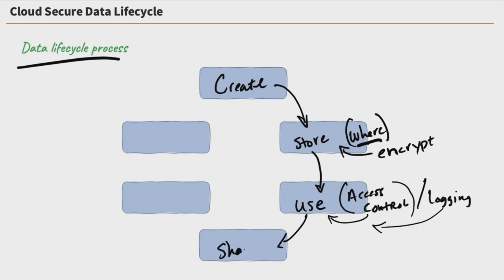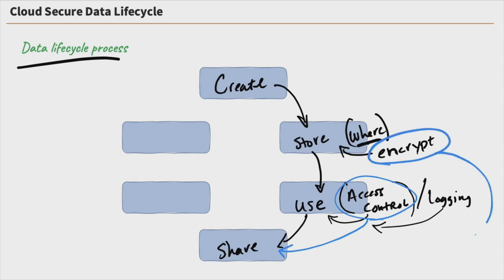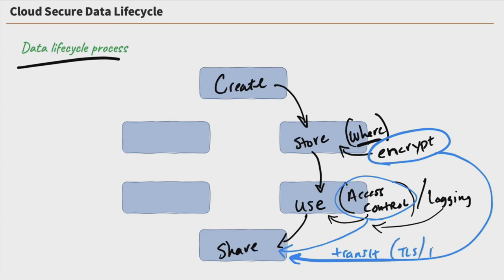At some point we might decide to share out our data. This is where the access control from the use phase carries over to sharing, because we need to provide a way to authenticate users who we share our data with, ensuring it's only accessed by authorized users. The encryption we discussed in the store phase also applies to sharing. When we talk about data in transit — if we're sharing it via email or some type of data transfer — that data is transiting across an untrusted network, so we need to protect it. Encryption handles that; we talked about using TLS (transport layer security) and IPsec as valid ways to protect data in transit.